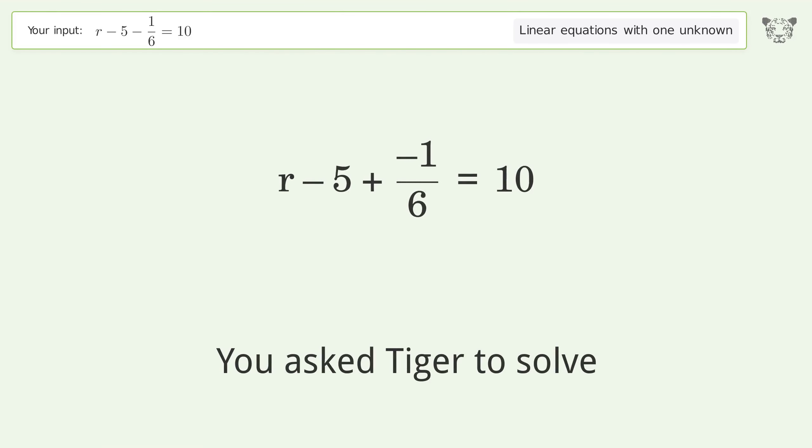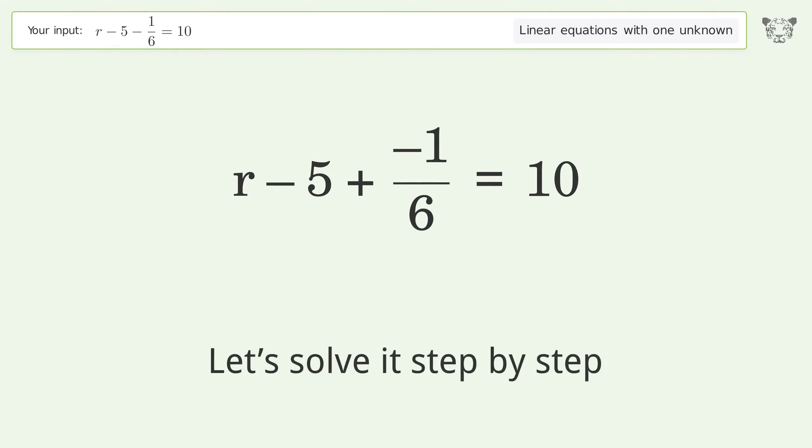You asked Tiger to solve this. It deals with linear equations with one unknown. The final result is r equals 91 over 6. Let's solve it step by step.